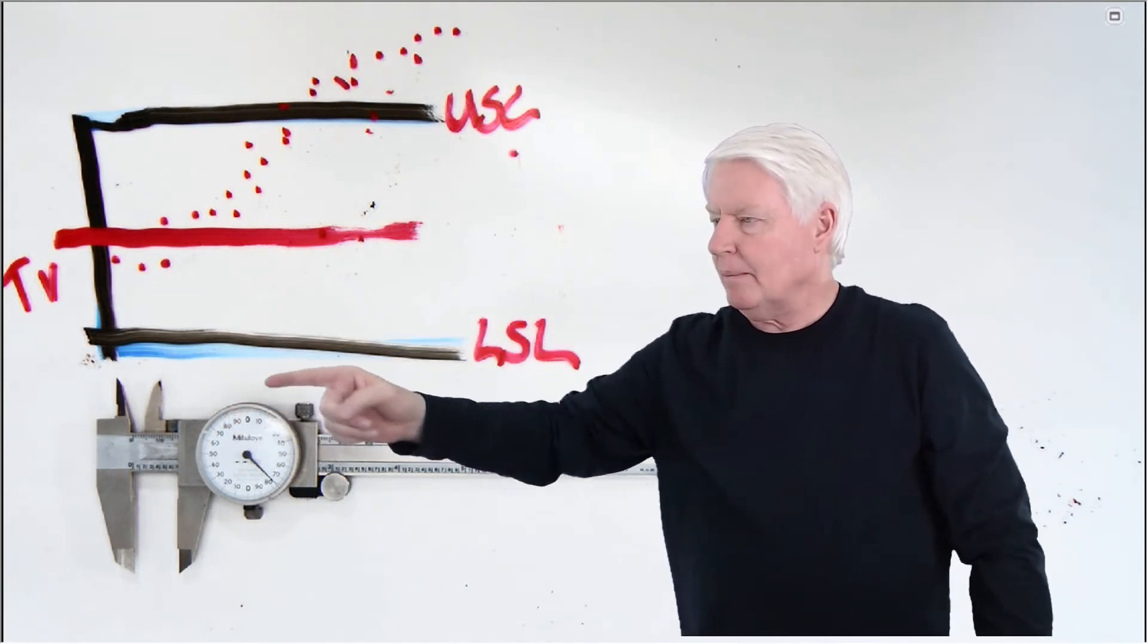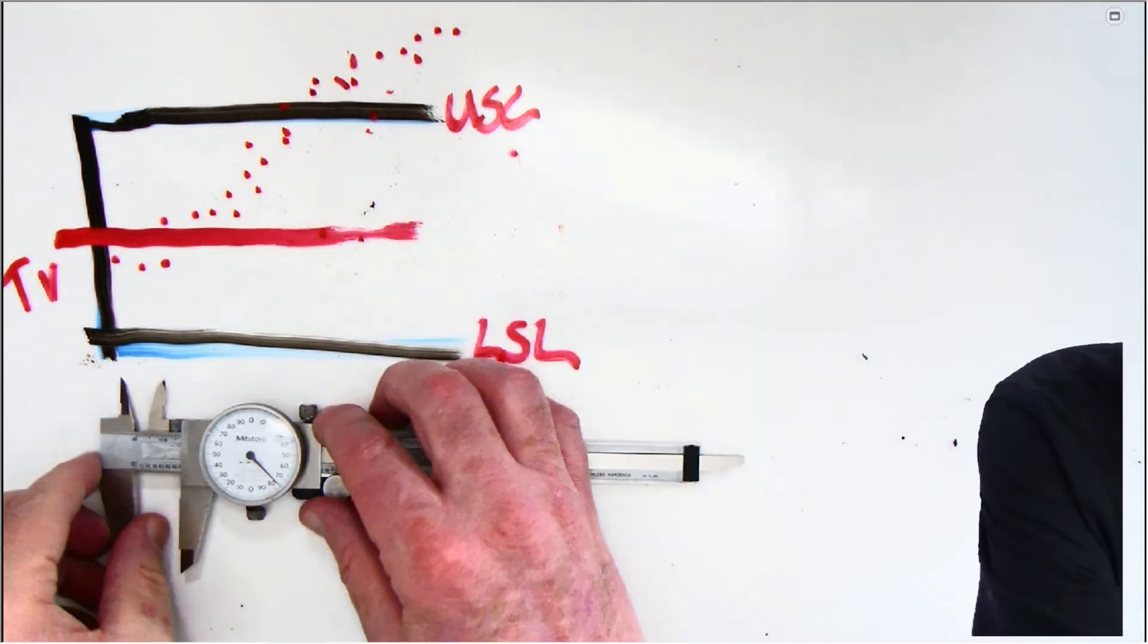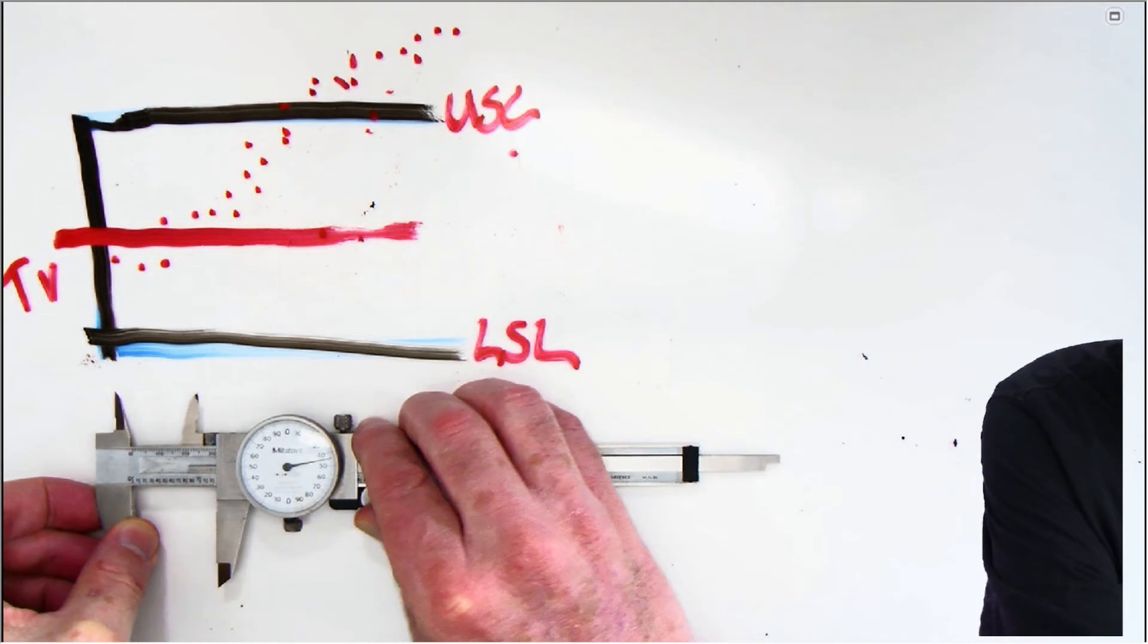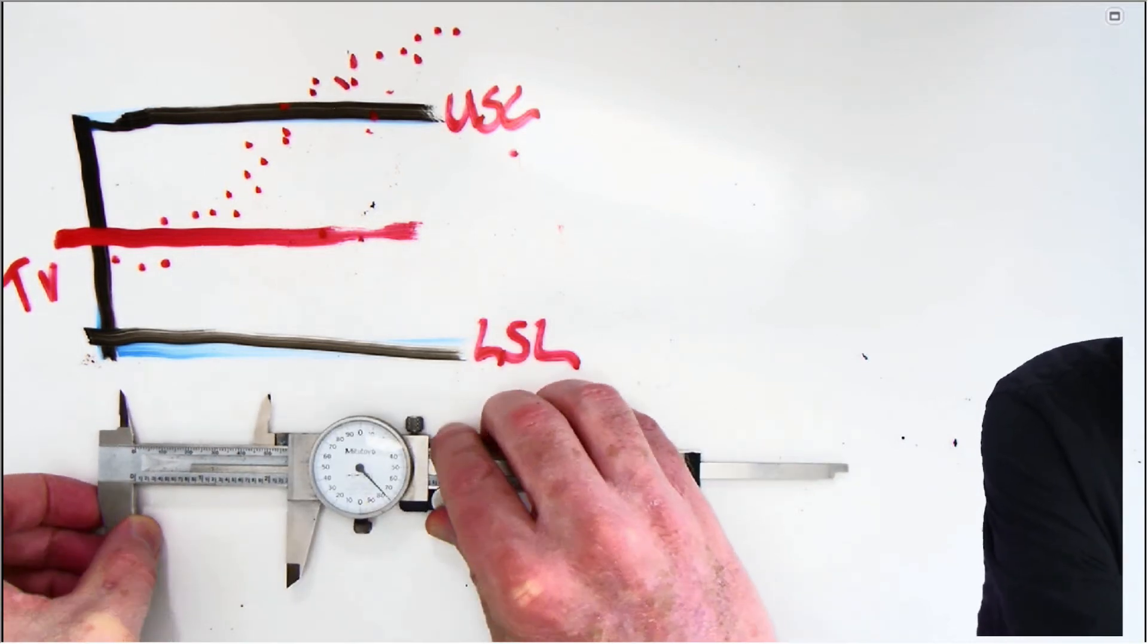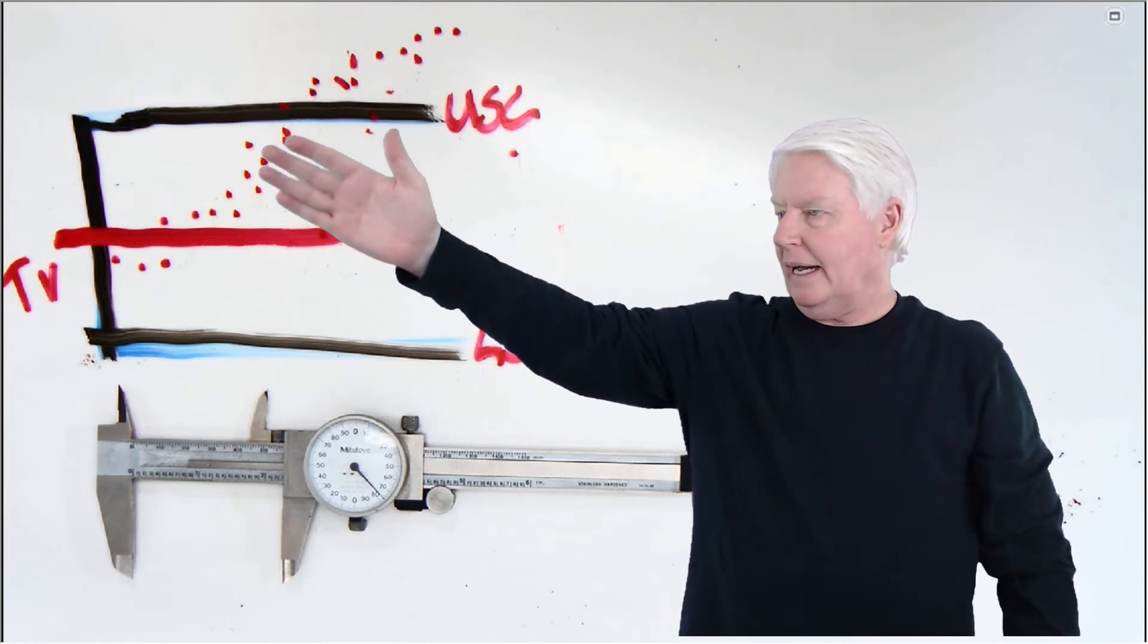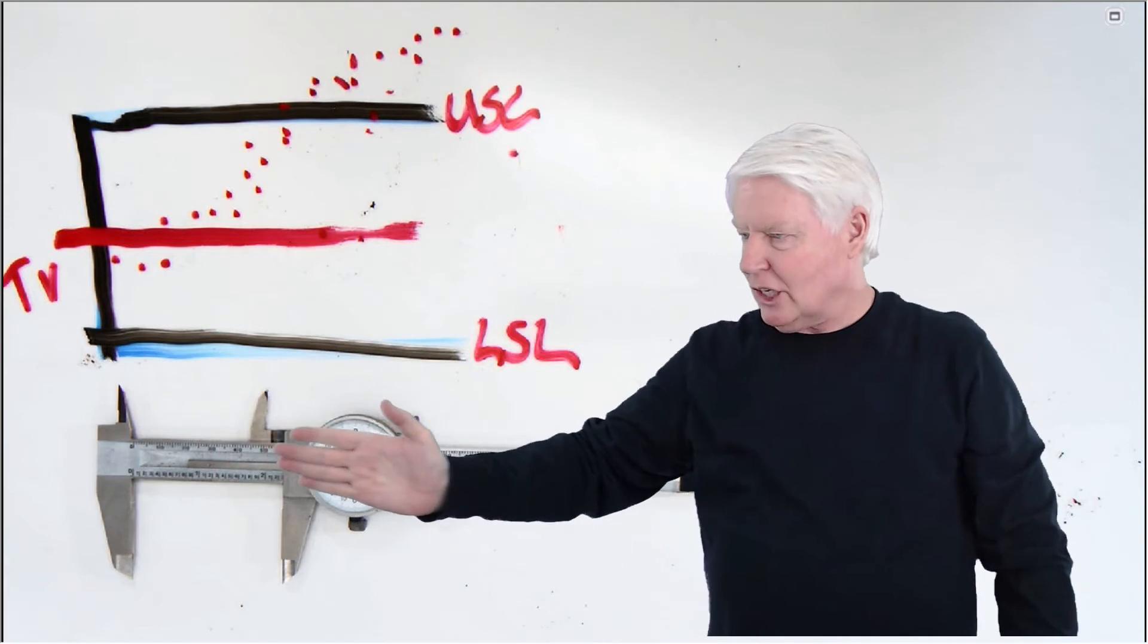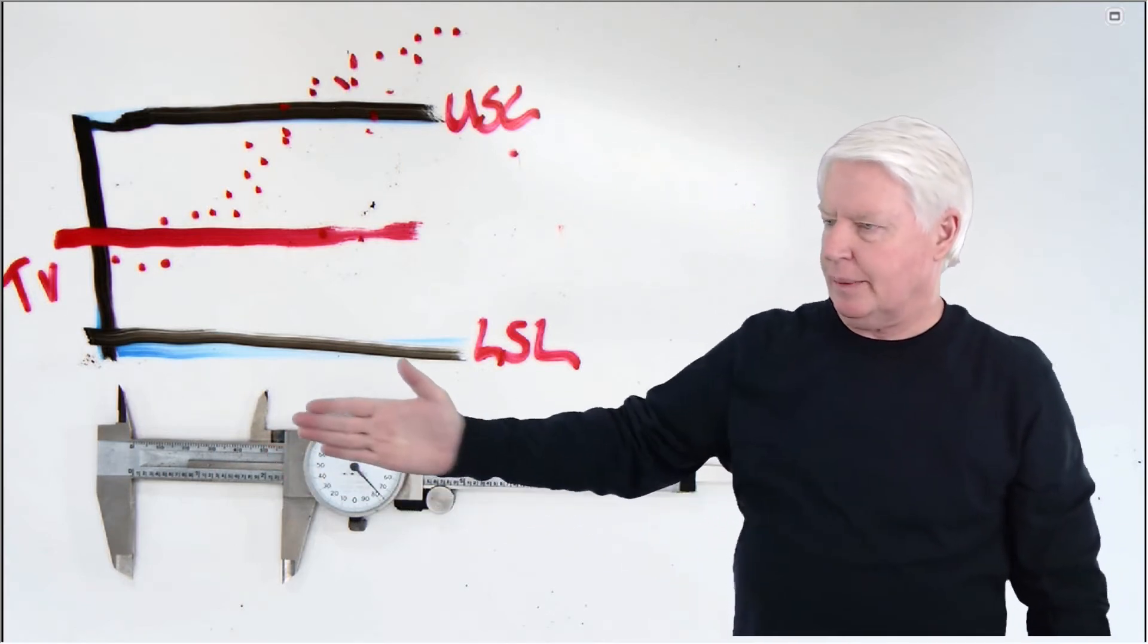Now I'm going to open it up more. Notice what happened to the bias. Oh, no, we don't like this. Now I'm going to come out here and look at it again. And right here. Oh, look at the bias. It's going up, isn't it? It's going up. The bias changes over the operating range of this instrument.